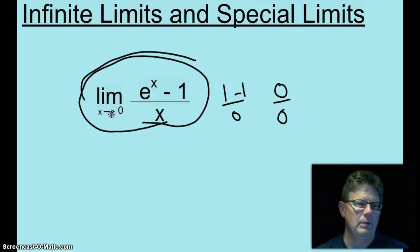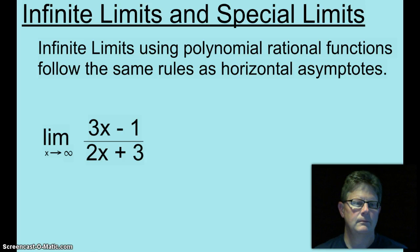First, let's talk about infinite limits. Infinite limits using polynomial rational functions follow the same rules as horizontal asymptotes. So what is the limit as x approaches infinity of 3x minus 1 over 2x plus 3? You will look at the degree of the numerator and the denominator. You will notice that they are both 1. Since they are both 1, take the lead coefficients and the limit as x approaches infinity will equal 3 halves.